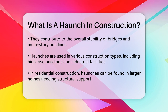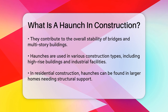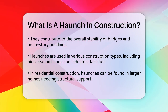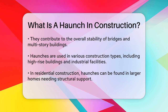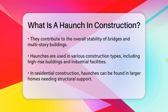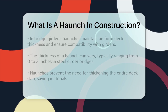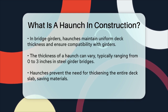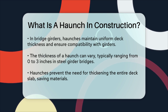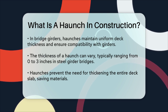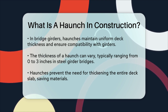In the context of bridge girders, a haunch is the area between the top of the girder and the bottom of the concrete deck. This area helps maintain a uniform deck thickness and ensures geometric compatibility between the deck slab and the girders. The haunch can vary in thickness to accommodate the geometry of the girders and any cross-slope issues. In steel girder bridges, the haunch is typically around 0 to 3 inches thick, but can be thicker in cases with extreme geometry issues, preventing the need to thicken the entire deck slab.